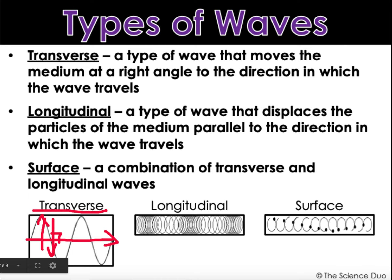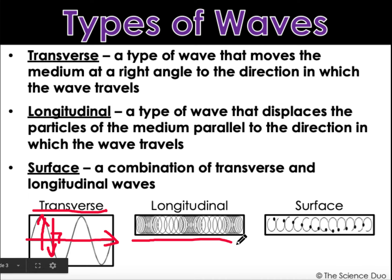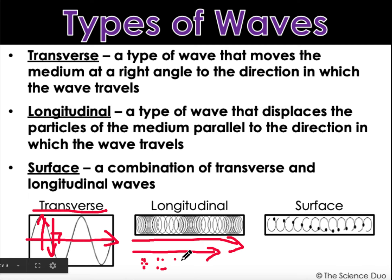A longitudinal wave is a type of wave that displaces the particles of the medium parallel to the direction in which it's traveling. The energy is traveling in this direction and the particles in the wave are also traveling in this direction. It sort of looks like a slinky. If you look at the particles, what you're seeing is the particles are moving — here they're all bunched up, but as they move they spread out a little bit and then they start to bunch up again. So the particles are moving in the same direction that the medium is moving.